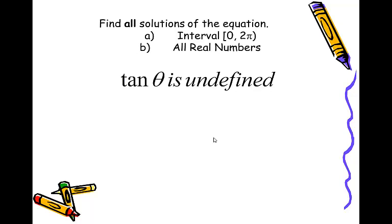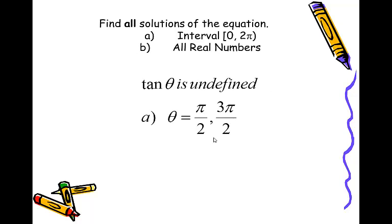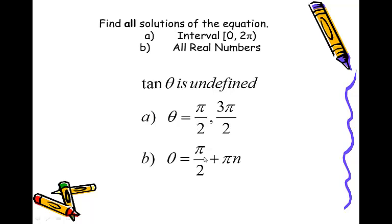Describe all angles whose tangent is undefined. Tangent is undefined at pi over 2 and 3 pi over 2 — the top and bottom of the unit circle. These are offset by exactly pi radians, and the period of tangent is pi, so we only need one of them: pi over 2 plus pi n. You could also write 3 pi over 2 plus pi n — as long as you only give one part to your answer, and n can be any positive or negative integer.